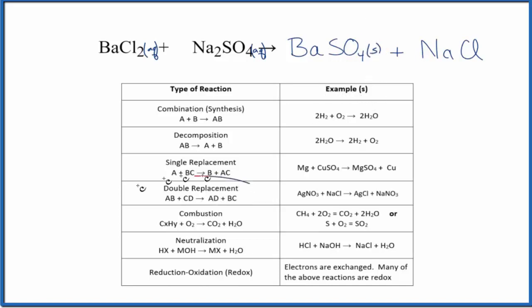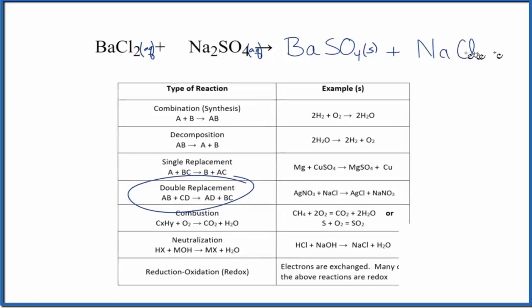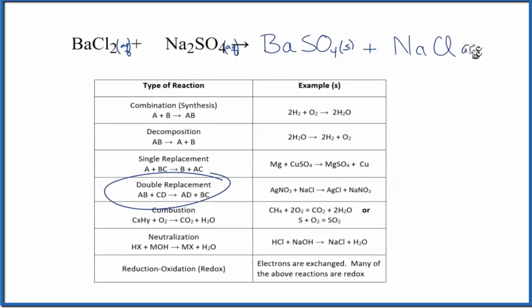So in addition to calling this a double displacement or replacement reaction, we could call it a precipitation reaction as well. And sodium chloride, that's very soluble. Put a little AQ there to show it's dissolved in water. So this is the equation for BaCl2 Na2SO4.